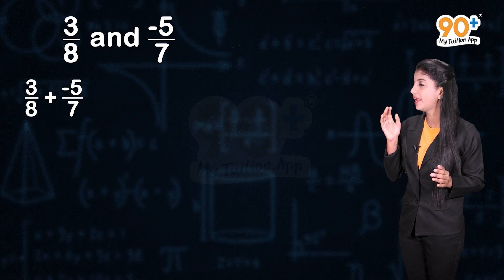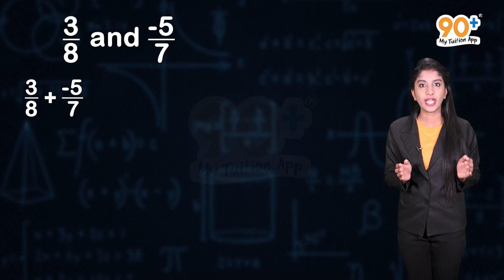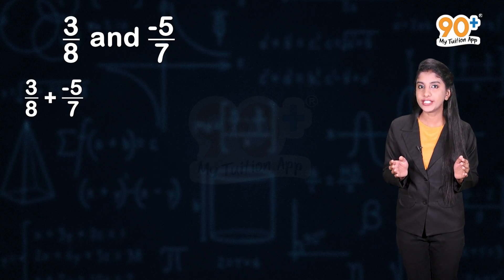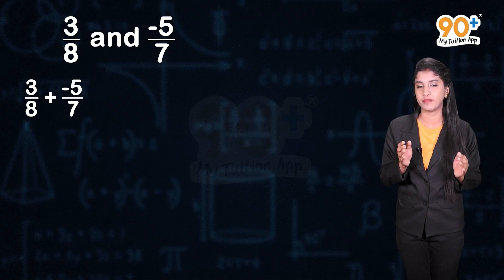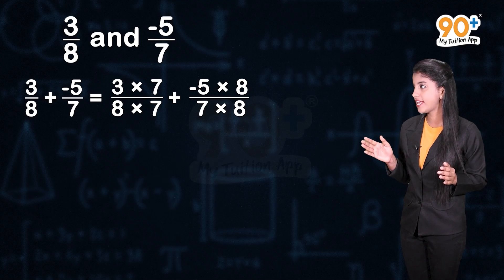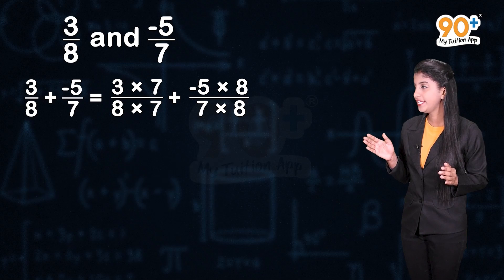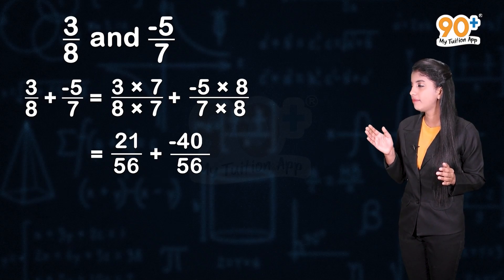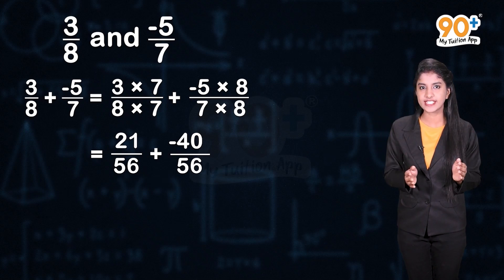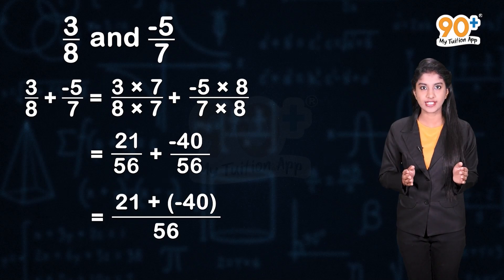Here, the denominators are 8 and 7. To make them the same, multiply both numerator and denominator by 7 in 3 by 8, and by 8 in minus 5 by 7. That is, 3 into 7 divided by 8 into 7, plus minus 5 into 8 divided by 7 into 8, which equals 21 divided by 56 plus minus 40 divided by 56.